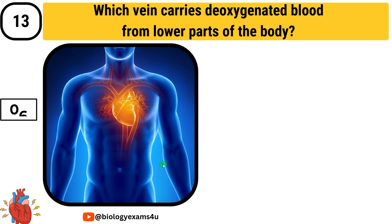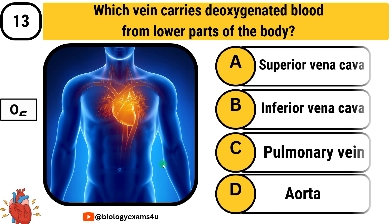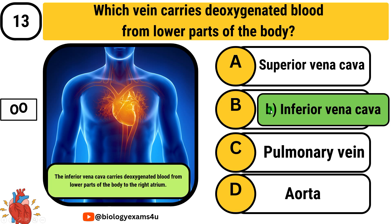Question number 13: Which vein carries deoxygenated blood from lower parts of the body? Option A: superior vena cava. Option B: inferior vena cava. Option C: pulmonary vein. Option D: aorta. The answer is inferior vena cava. The inferior vena cava carries deoxygenated blood from the lower parts of the body to the right atrium.